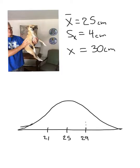So, what we're saying is most of the dogs, 68 percent of the dogs of this breed, fall somewhere in between this range, somewhere between 21 and 29 centimeters.